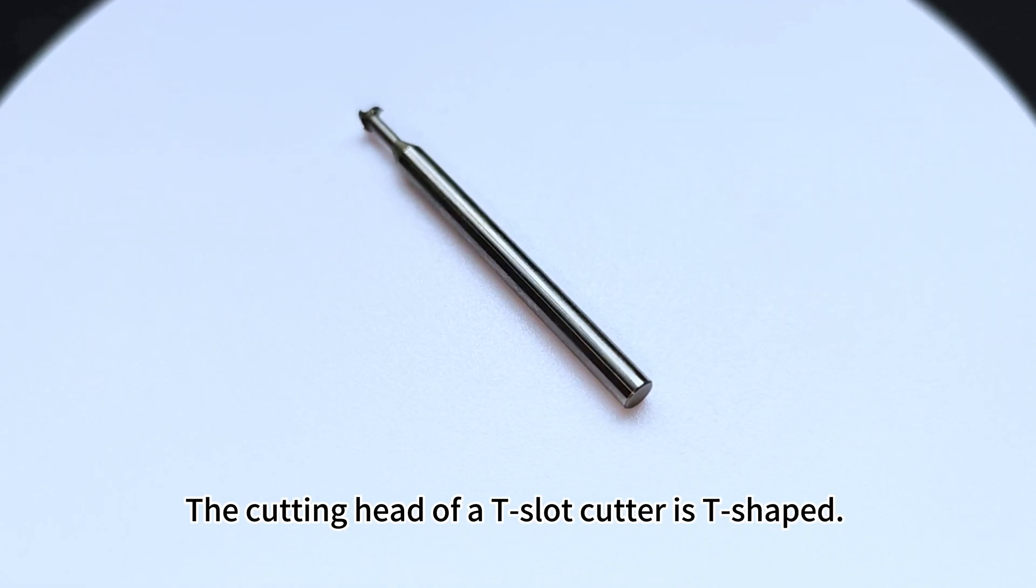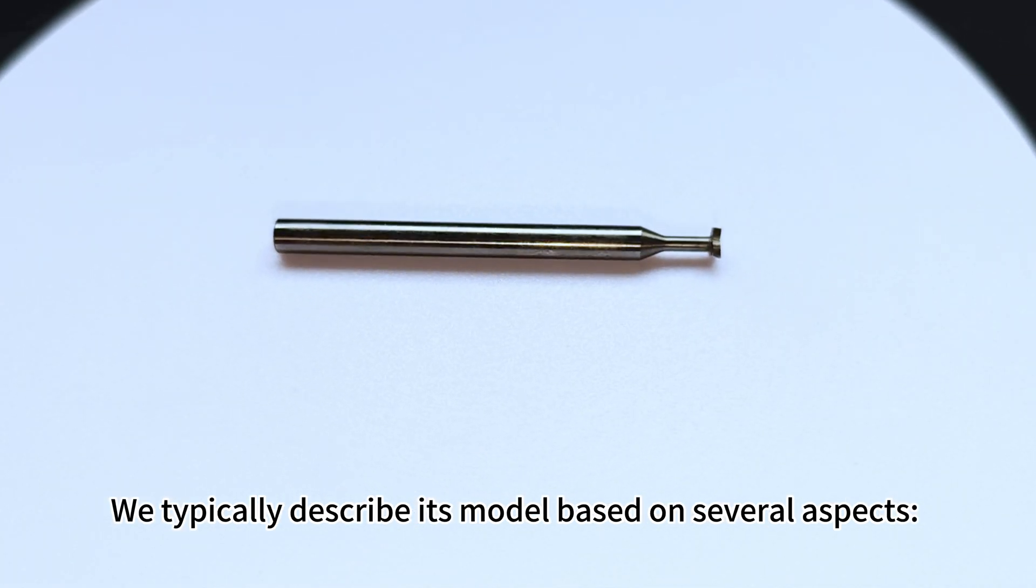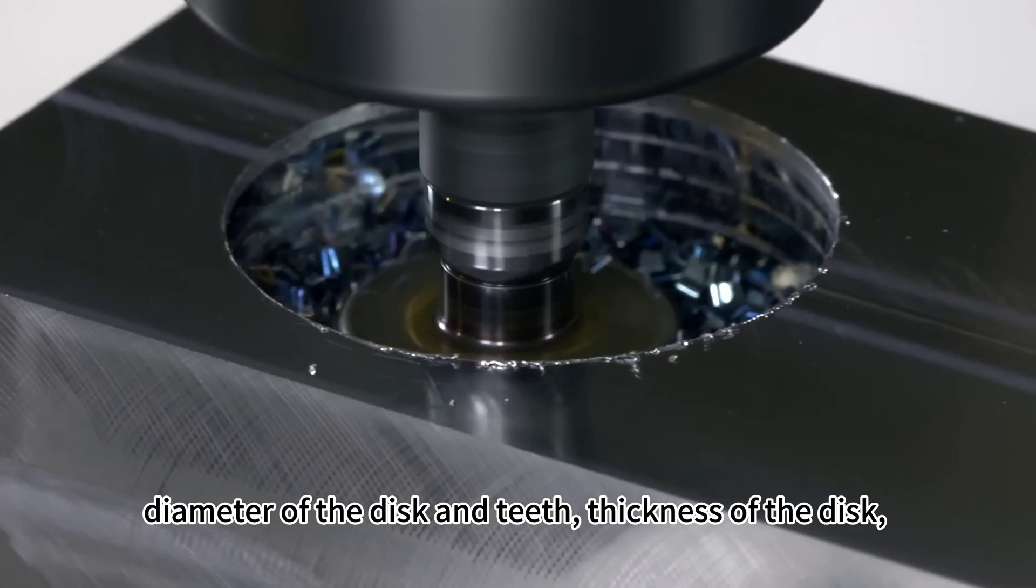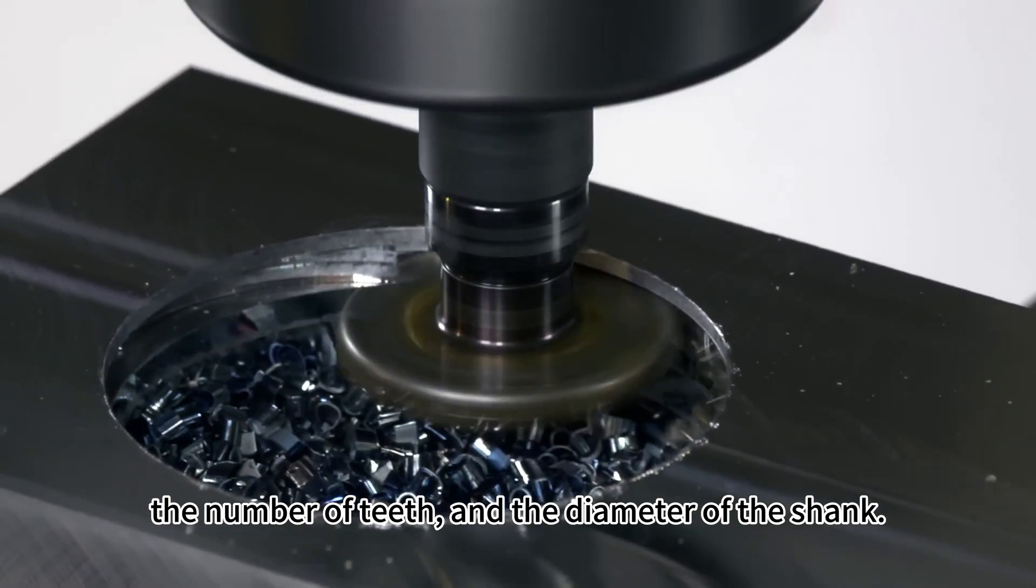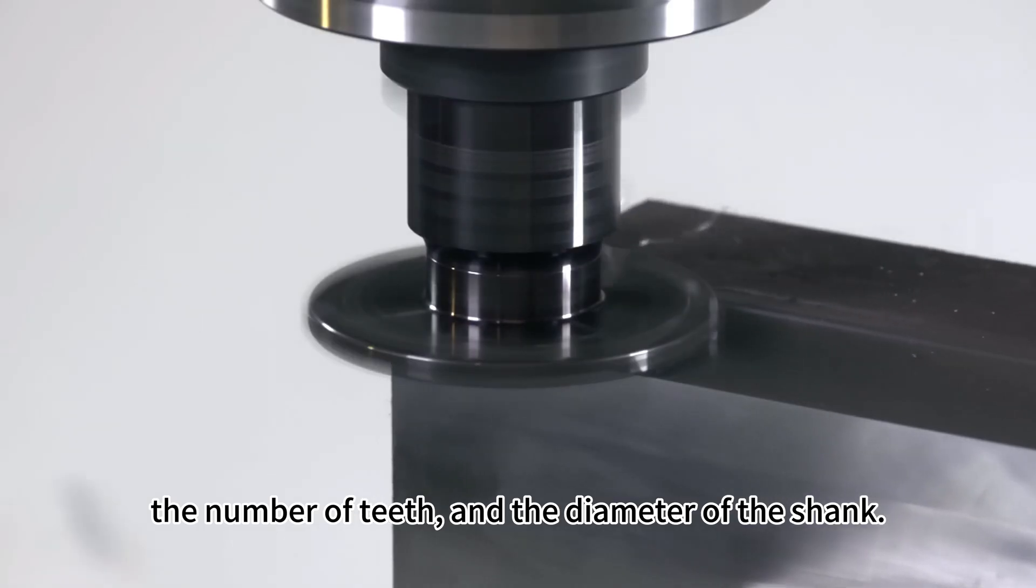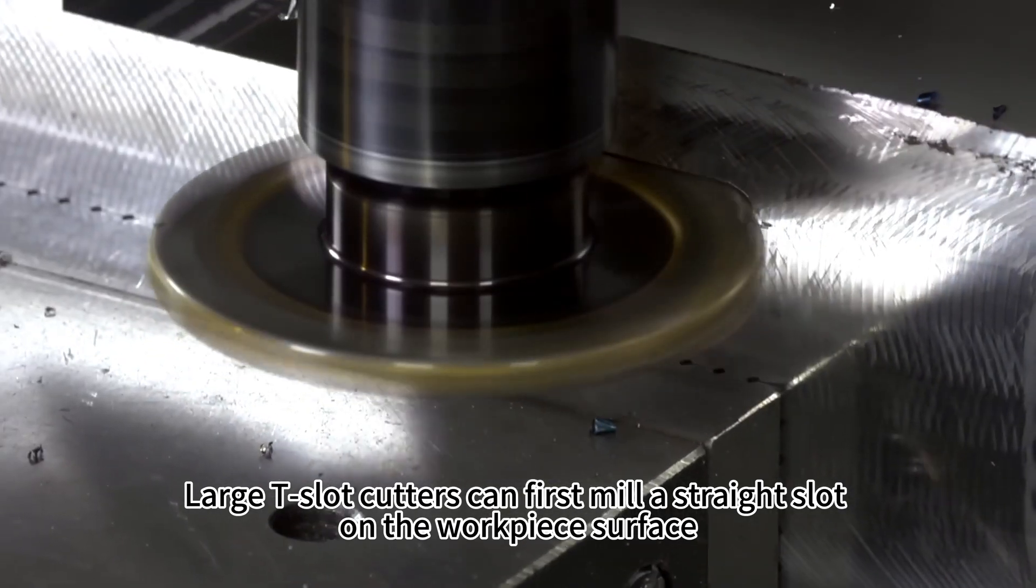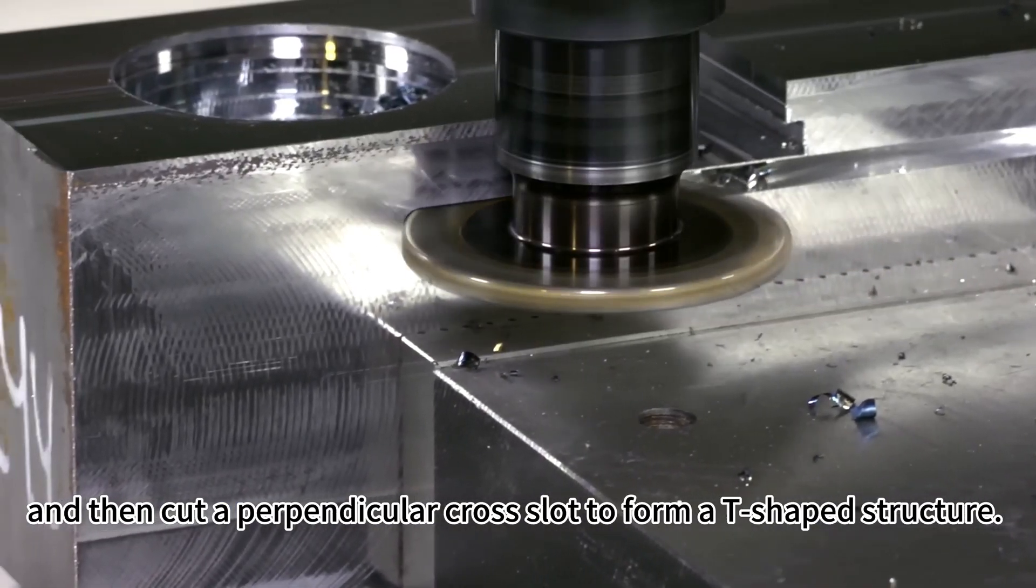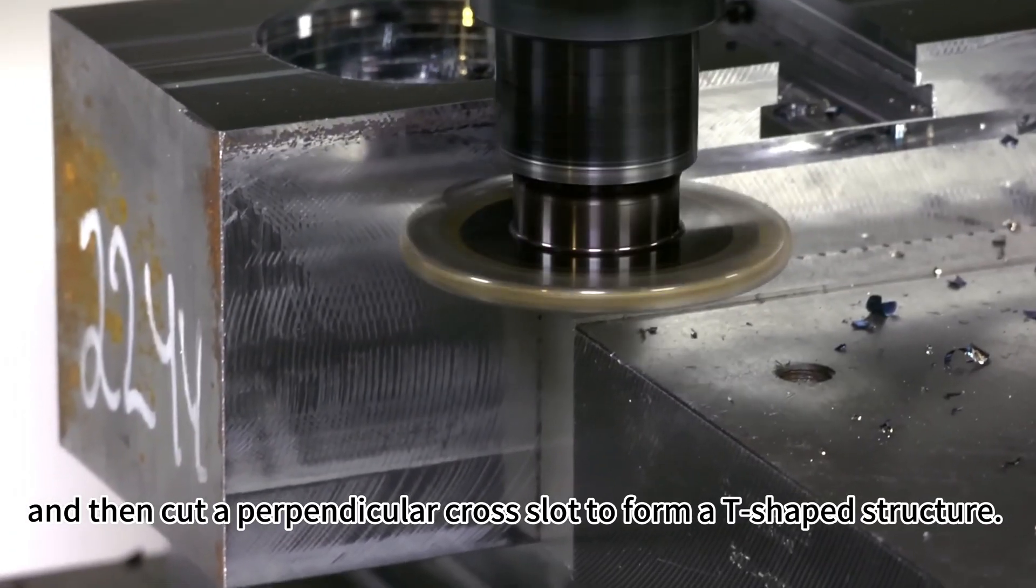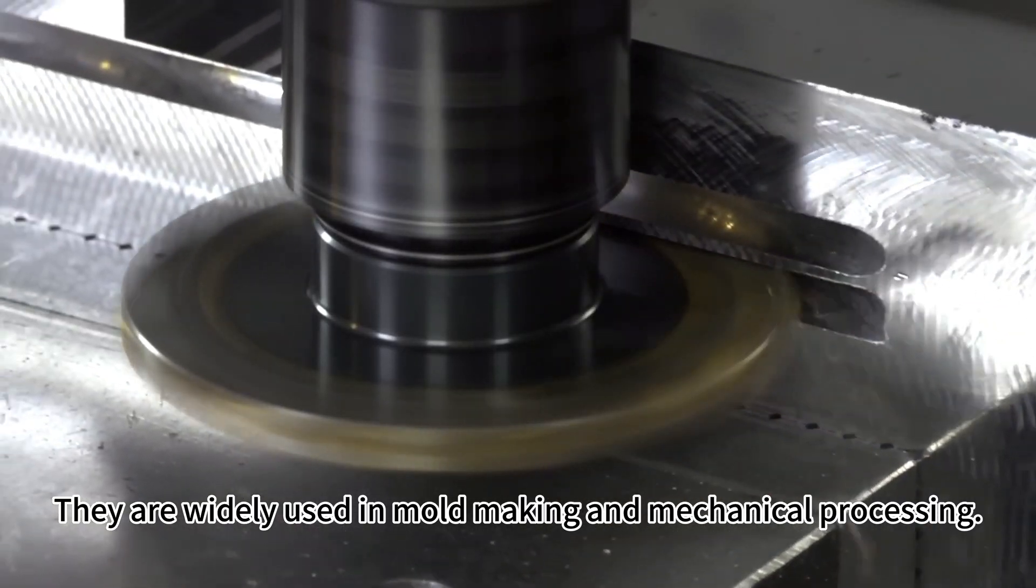The cutting head of a t-slot cutter is t-shaped. We typically describe its model based on several aspects: diameter of the disc and teeth, thickness of the disc, the number of teeth, and the diameter of the shank. Large t-slot cutters can first mill a straight slot on the workpiece surface, and then cut a perpendicular cross slot to form a t-shaped structure. They are widely used in mold making and mechanical processing.